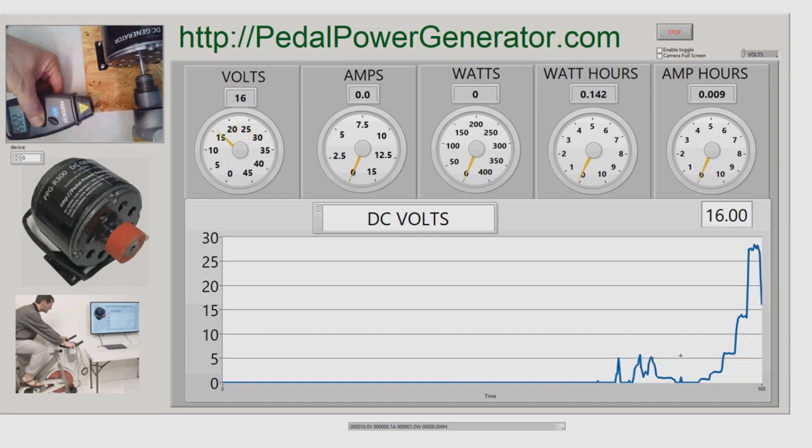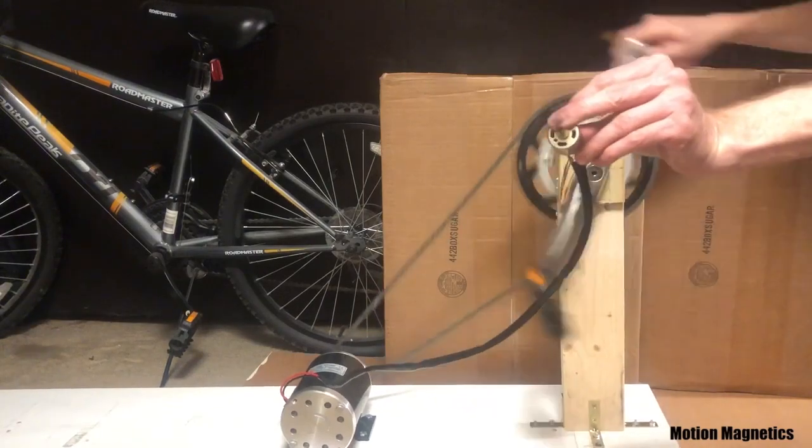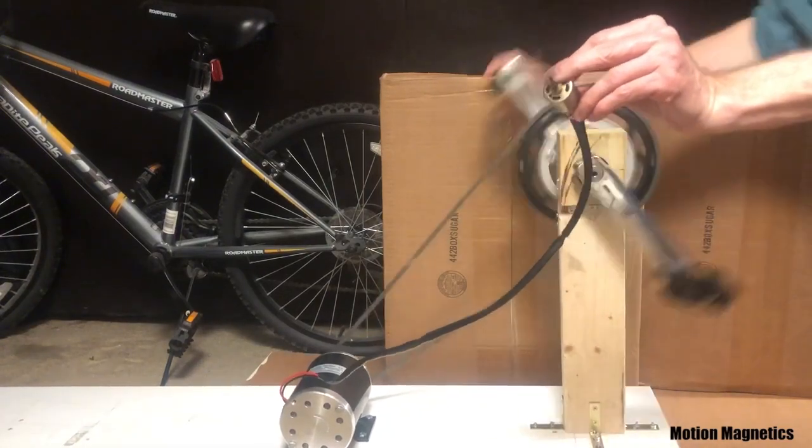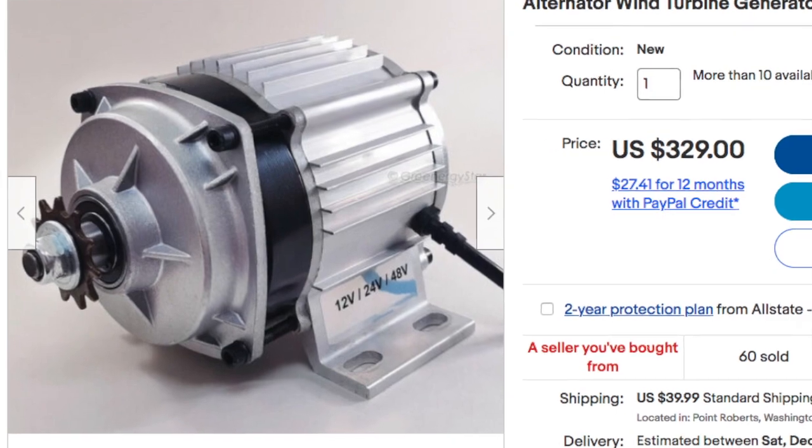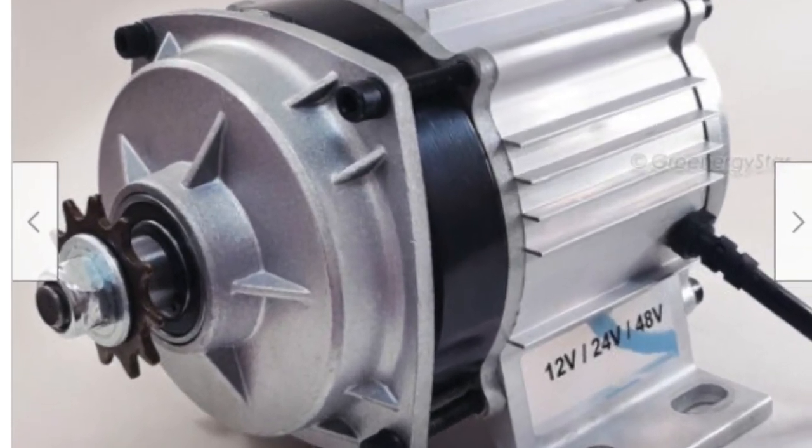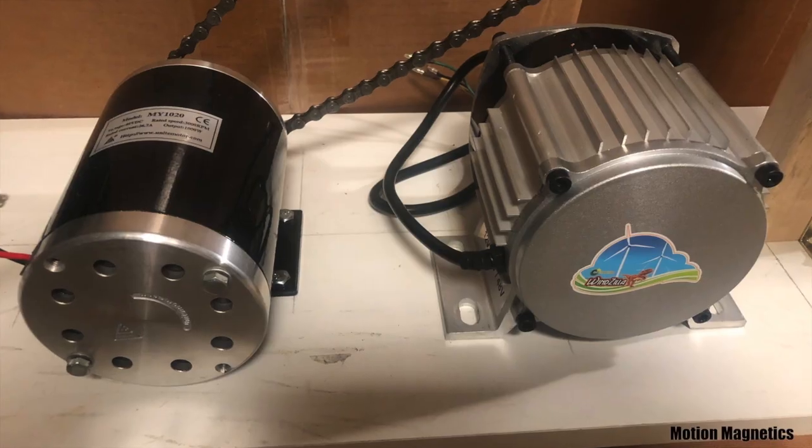As you see, it can get pretty ridiculous once you look at the numbers. So the simplest way around this would be to use an alternator designed to produce more power at lower RPMs.